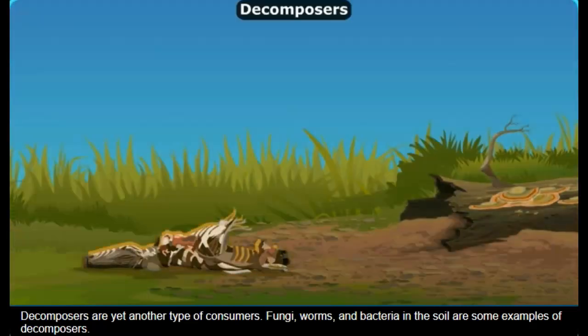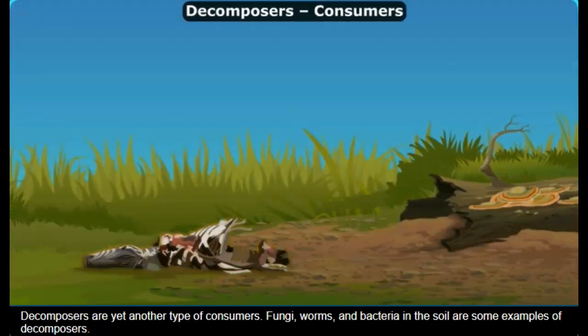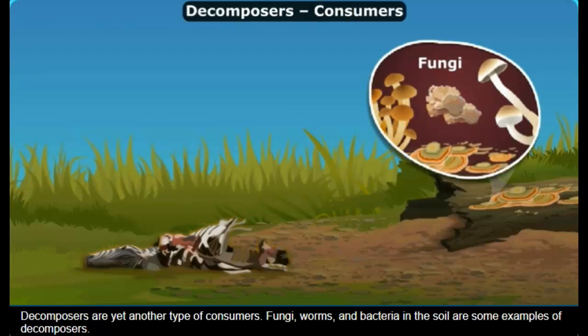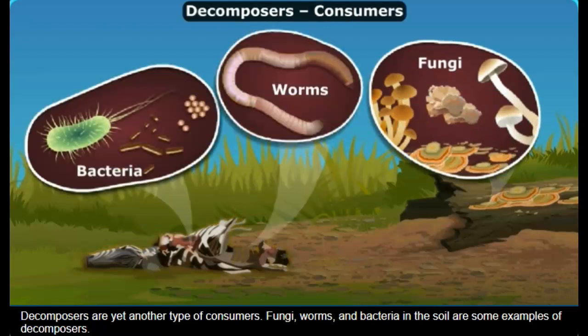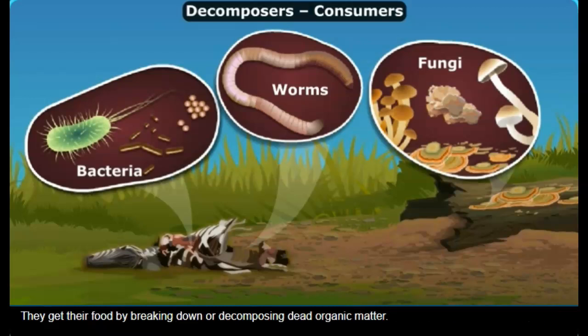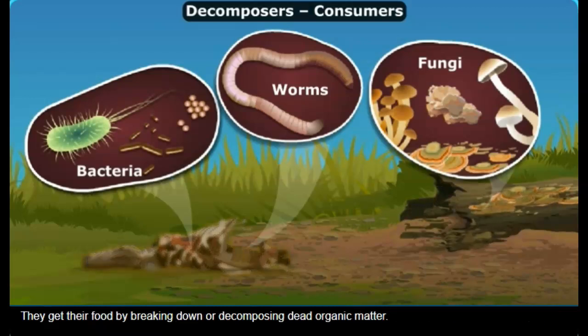Decomposers are yet another type of consumers. Fungi, worms, and bacteria in the soil are some examples of decomposers. They get their food by breaking down or decomposing dead organic matter.